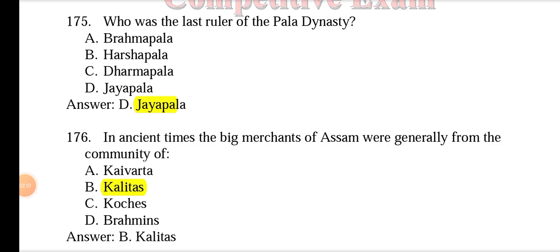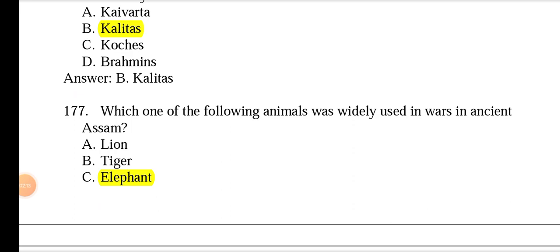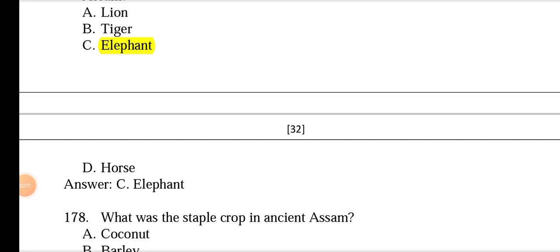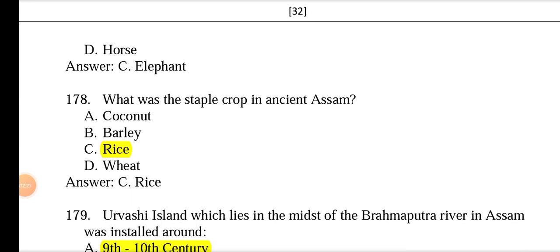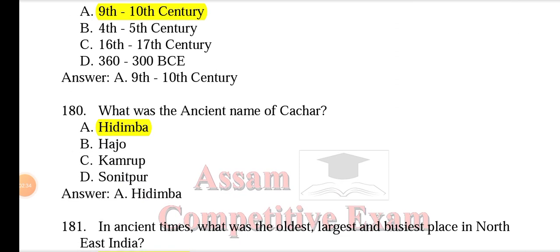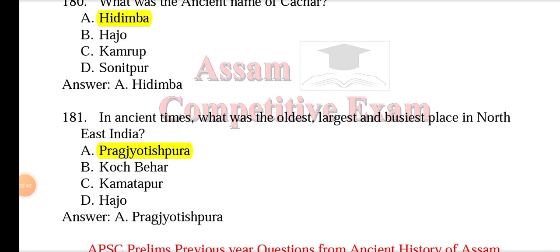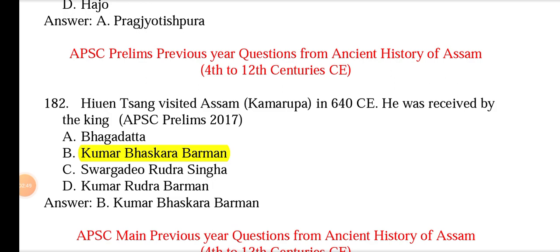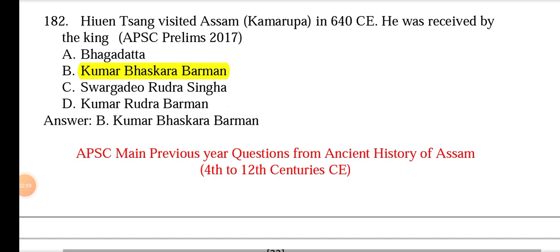In ancient times, the big landowners were generally from the community of Kalitas. The animal widely used in wars in ancient Assam was the elephant, due to the abundance of elephants here. The staple crop in ancient Assam was rice, and rice is still the staple crop of Assam today. The ancient name of Cachar was Hedimba. The oldest and biggest city in ancient northeast India was Pragjyotishpura. When Xuanzang visited Kamarupa in 1640 CE, he was received by King Kumar Bhaskar Varman. This was a PYQ from the APSC Prelim CCE.